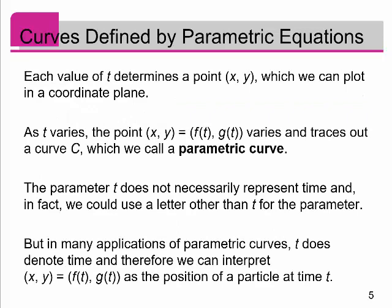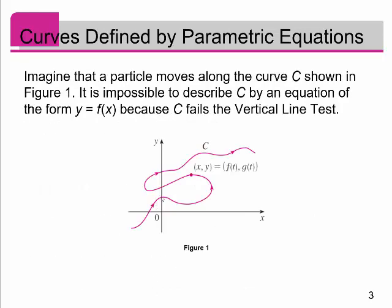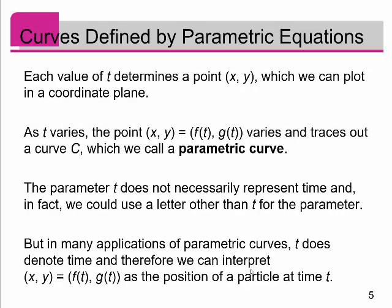Each value of t then determines the point x, y, which we can plot in the coordinate plane. So at time one, here's where the particle is — plugging one into these functions produces this point. At time two, it produces this point, and so on. As t varies, this point x comma y, where x and y are both functions of t — f of t and g of t — traces out the curve C. This resulting curve is what we call a parametric curve.